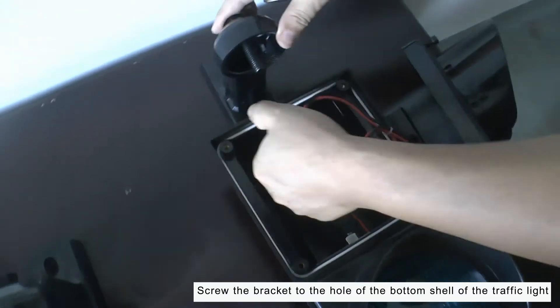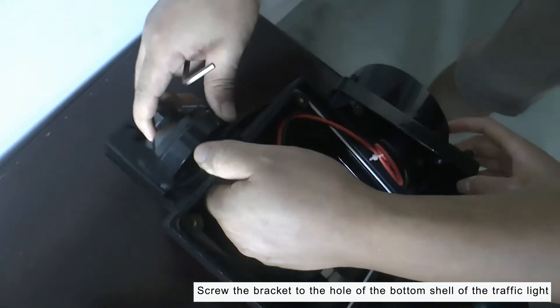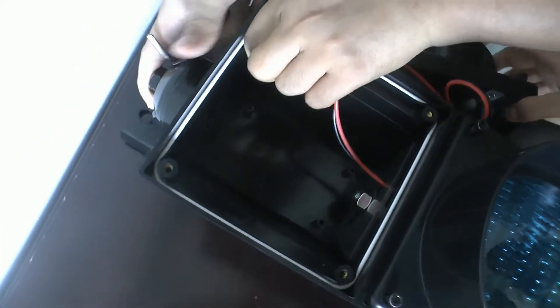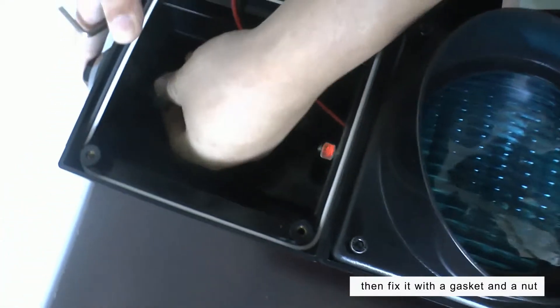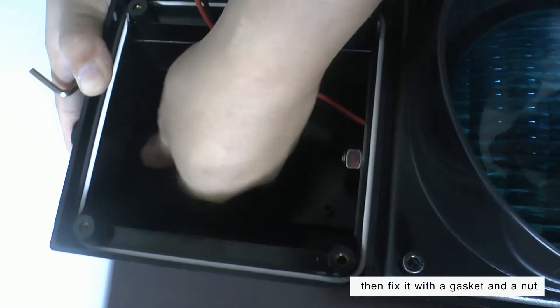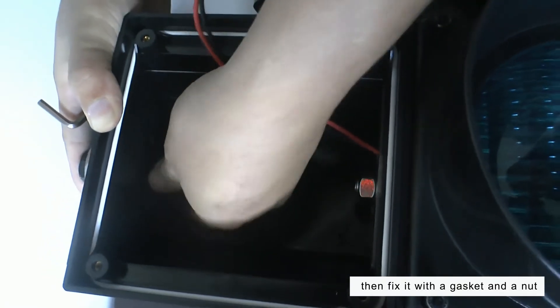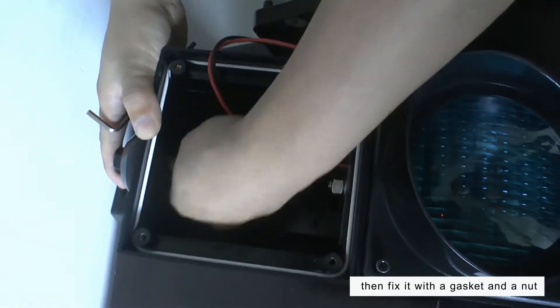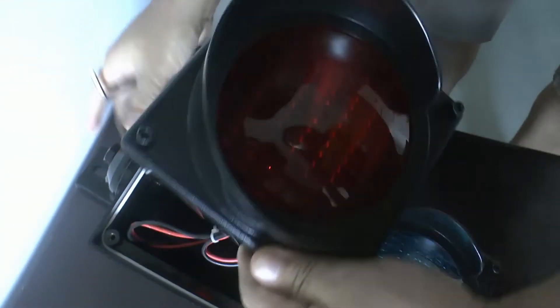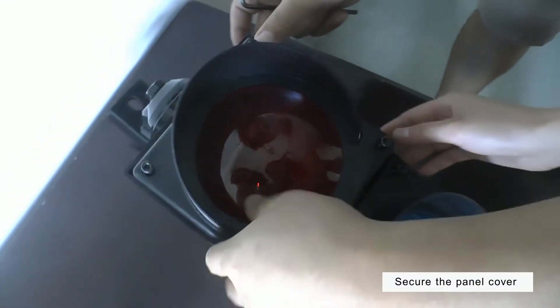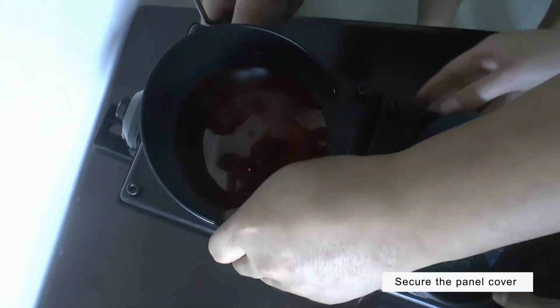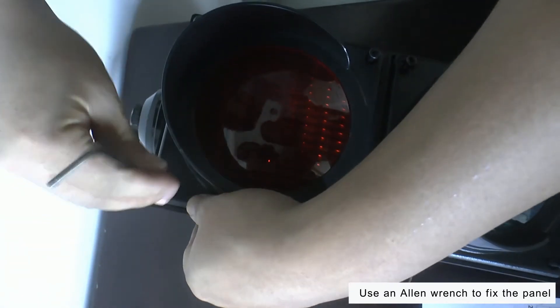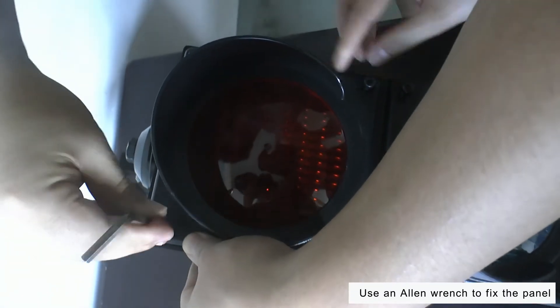Insert the screw to the traffic light and add the screws and fix it, and use the allen wrench to fix the traffic light.